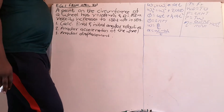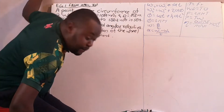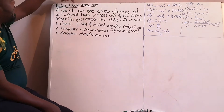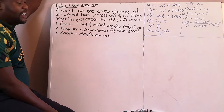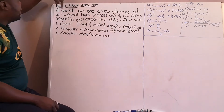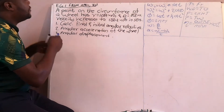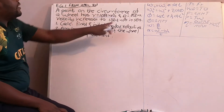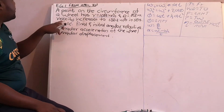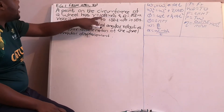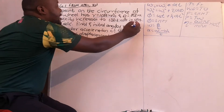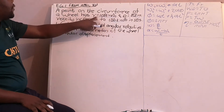This is your first example on angular motion, taken from the past paper of April 2018. A point on the circumference of a wheel has a velocity of 108 km per hour, the wheel has a diameter of 80 cm, and the speed increases from 108 to 126 km per hour in 50 seconds.